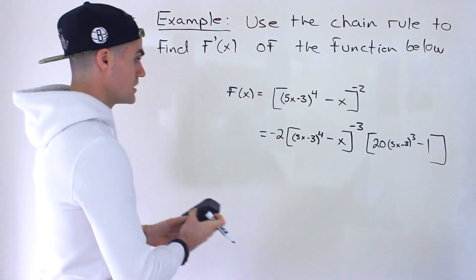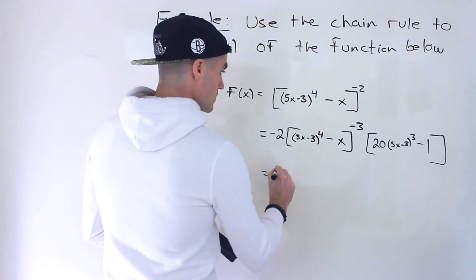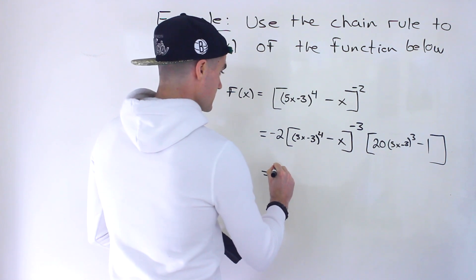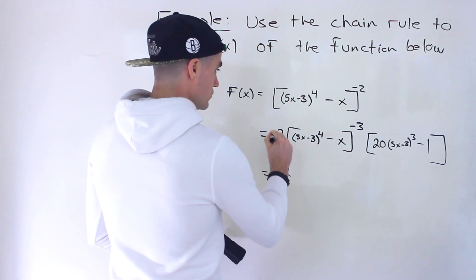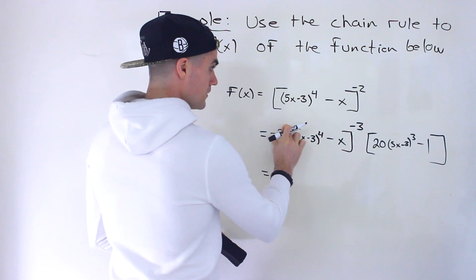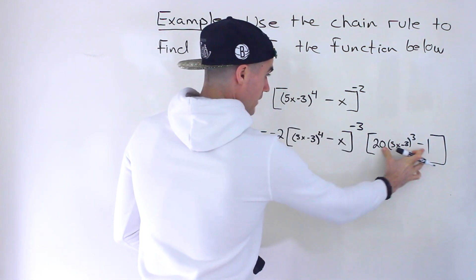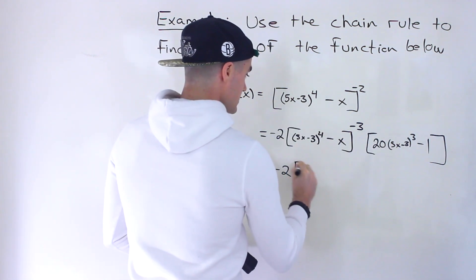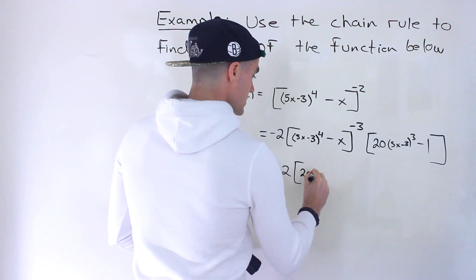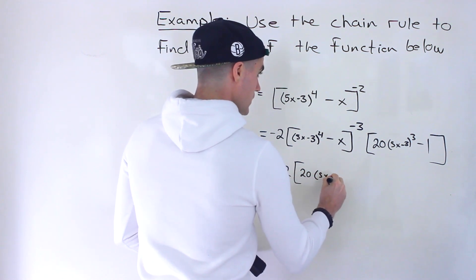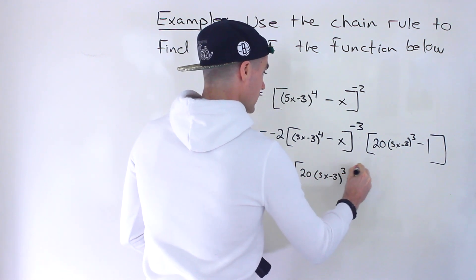So we could rewrite this as negative 2. This would stay in the numerator. And then we're multiplying by this. So that stays in the numerator as well. So we'd have 20(5x - 3)^3 - 1, like that.